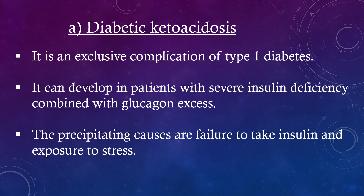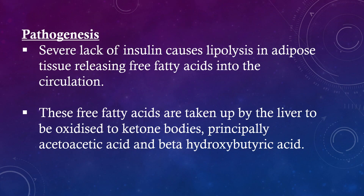Diabetic ketoacidosis is an exclusive complication of type 1 diabetes. It can develop in patients with severe insulin deficiency combined with glucagon excess. The precipitating causes are failure to take insulin and exposure to stress. Regarding pathogenesis, severe lack of insulin causes lipolysis in adipose tissue, releasing free fatty acids into the circulation.